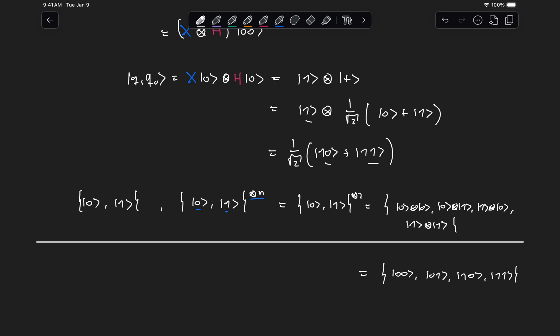And then for three qubits, for example, every state could be represented as linear combinations of 000, 001, all the way to 111.